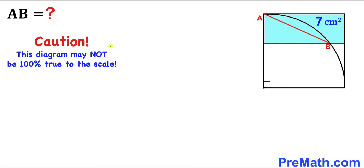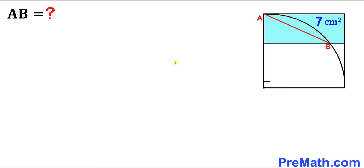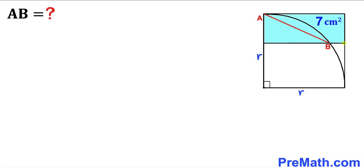Please keep in mind that this figure may not be 100% true to scale. Let's get started. We can see that this is the radius of the quarter circle — let's label it as lowercase r. This is also the radius of the quarter circle, also lowercase r. Since we are dealing with a square, if this side length is r, then this side length is r as well.